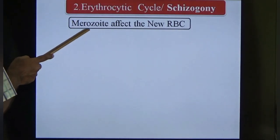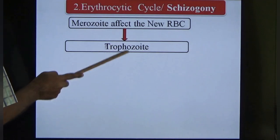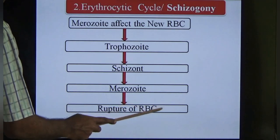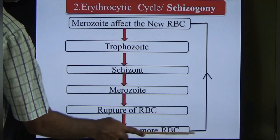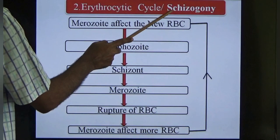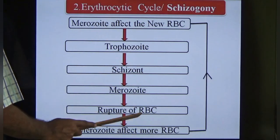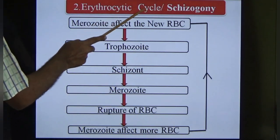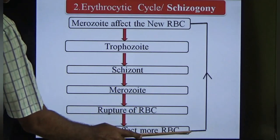The erythrocytic cycle: once the merozoite enters the RBC, it converts to the trophozoite, then to the schizont, then produces merozoites again. Each RBC ruptures, the merozoites come out and infect more RBCs — the cycle continues. This erythrocytic cycle is very important because it is responsible for the intermittent type of fever. When each RBC ruptures and merozoites come out, it produces the fever.